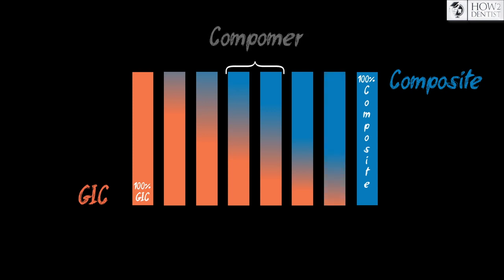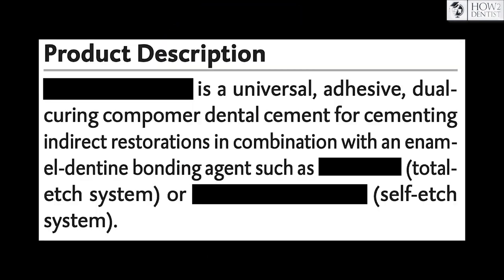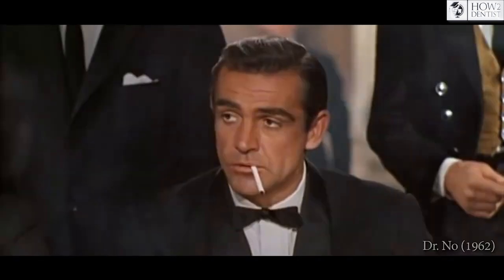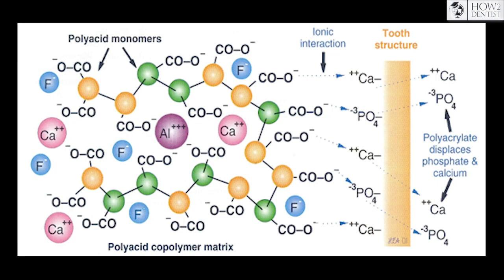This lack of definition is exploited by some manufacturers, who give a usual composite as a compomer. How can you identify a true compomer? By the instruction. For example, take the instruction of a random compomer where it states it is a compomer — then read further and stop. If it says you need to apply an adhesive system with etching, that is a problem, because a true compomer does not need a bond. It has an adhesion mechanism from the GIC.